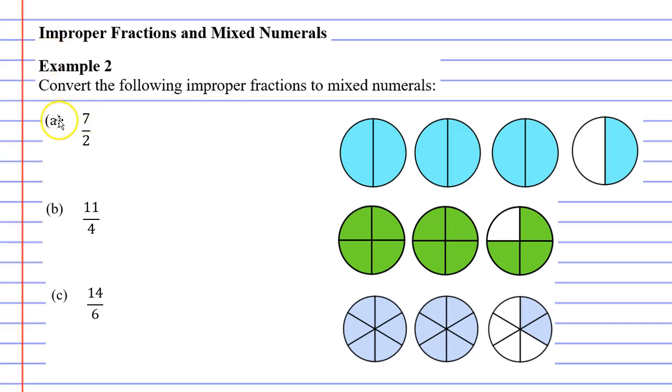So looking at question A, we can see we've got the improper fraction 7 over 2. How do we convert that to a mixed numeral?